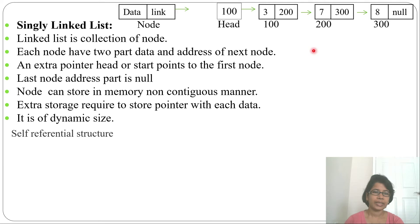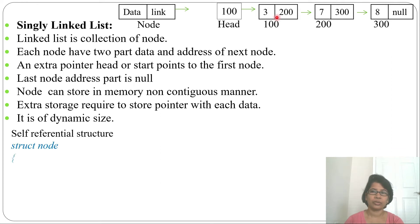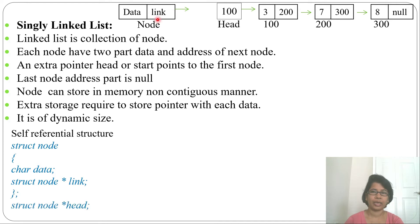A node has one data part and one pointer part. We represent this using a self-referential structure. We use the keyword struct — for example, struct node — and inside it we write the data type (like int data) and another struct node pointer called link, which holds the address of the next node. Then struct node *head is a pointer that holds the address of the first node. This is the basic self-referential structure, which you can change according to your requirement.